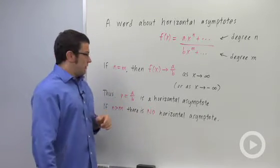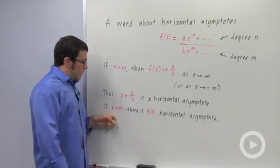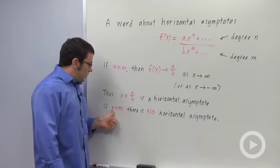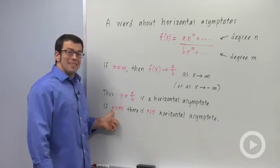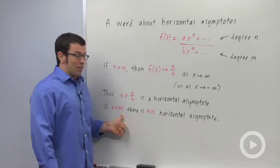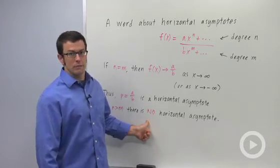That makes it really easy to find the horizontal asymptote. One thing you should note: if the degree of the numerator is larger than the degree of the denominator, there is not a horizontal asymptote.